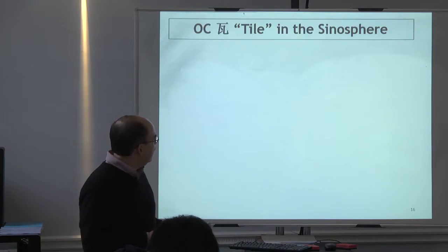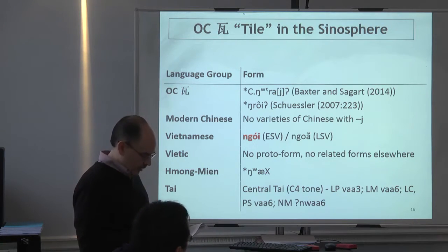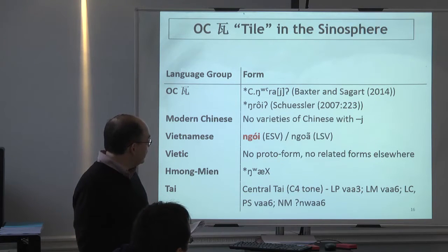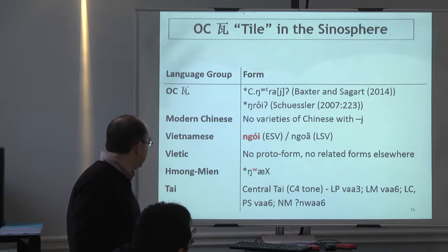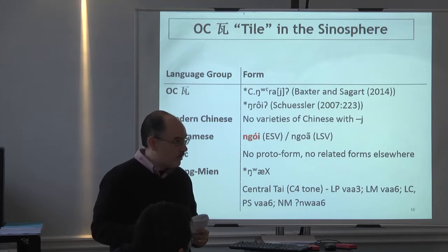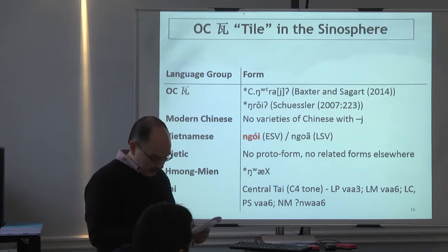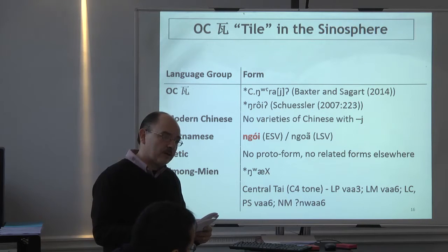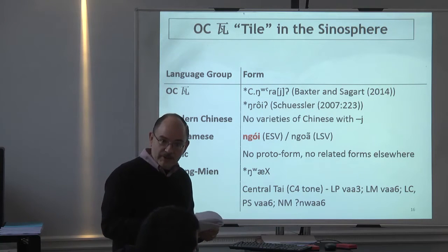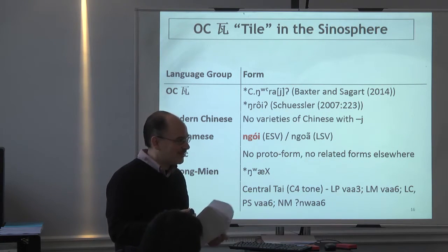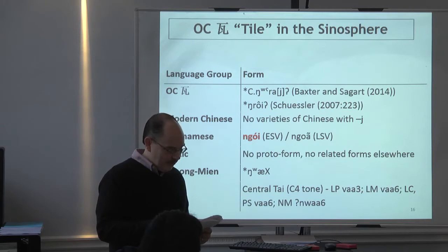Tile — interesting because of the final off-glide. As far as I can tell, no modern variety of Chinese has it — they all have 'ah.' Mon-Mien, Tai — 'ah.' Vietnamese has a final off-glide. Apparently it was Baxter who first noted it in the Odes, and it rhymes in the Odes. So that's the linguistic evidence.